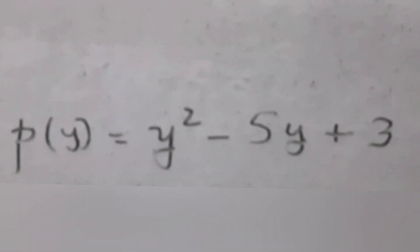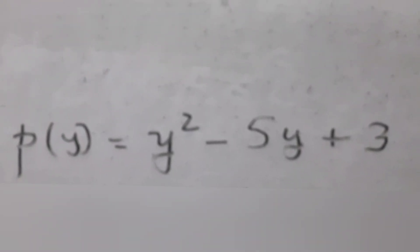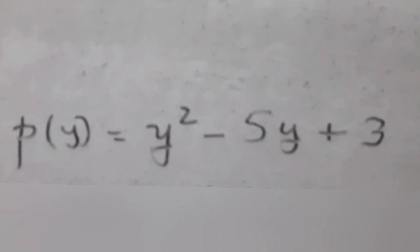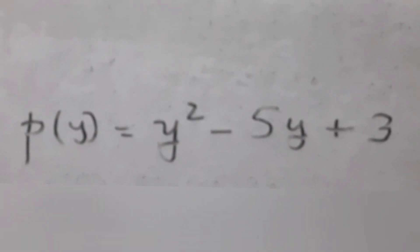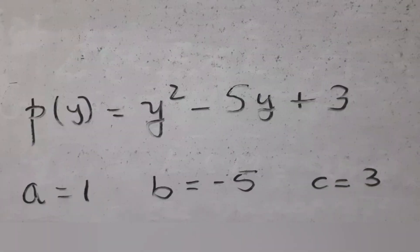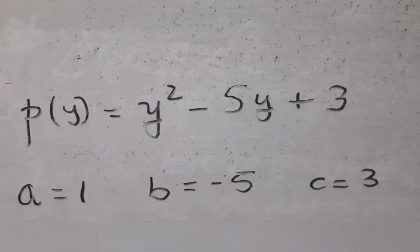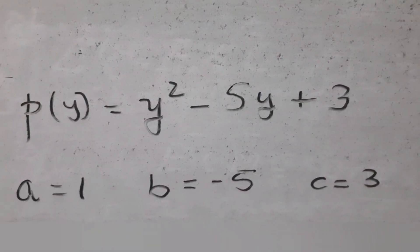Compare the given polynomial with the standard quadratic ay square plus by plus c, so a equal to 1, b equal to minus 5, and c equal to 3.